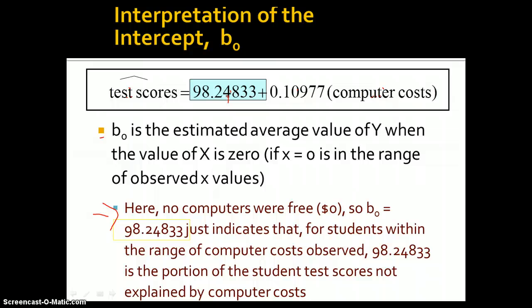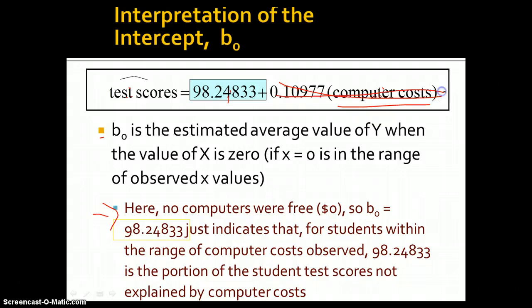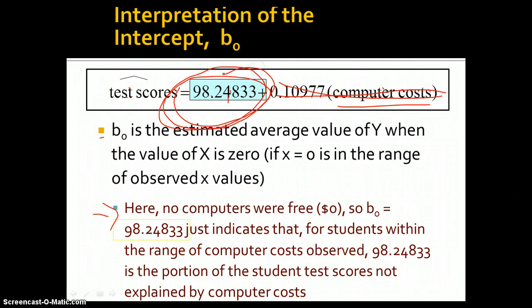In other words, regardless of computer costs, if we just take this whole thing out, this is what test scores are. So this number tells us what's explained by everything that is not the computer cost variable.